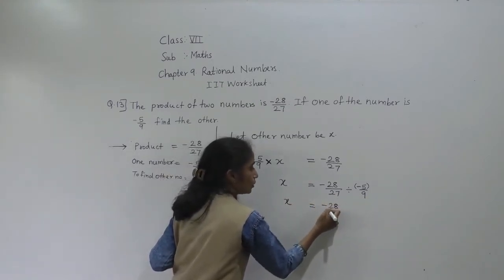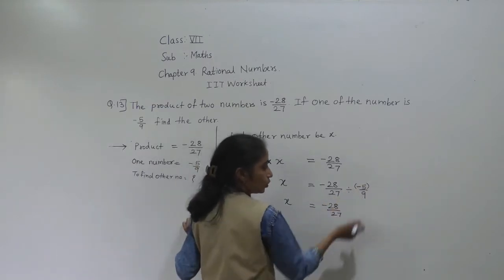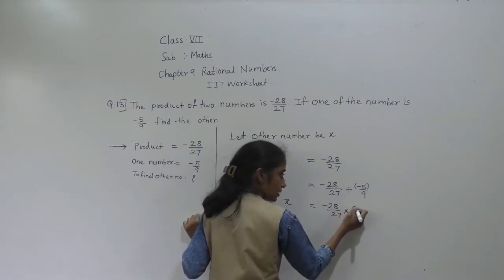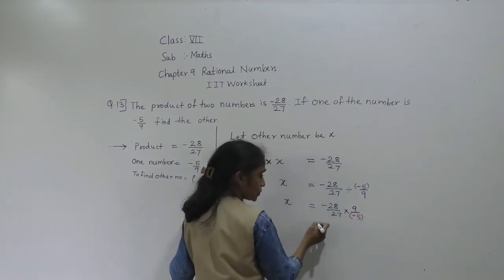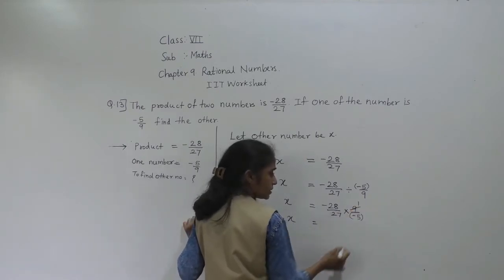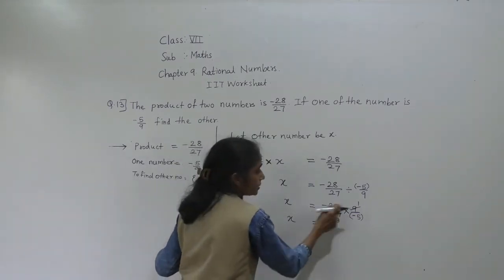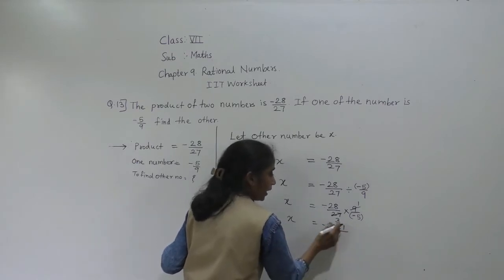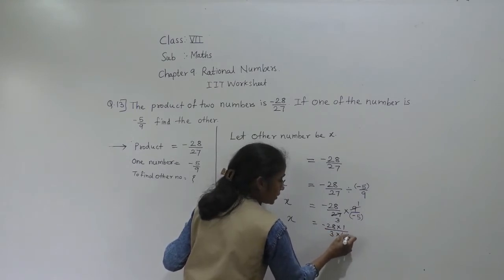So X is equal to minus 28 upon 27. Now since it is divided, we take the reciprocal of minus 5 upon 9. The reciprocal of minus 5 upon 9 is 9 upon minus 5. Now we can simplify: 9 threes are 27, so we get minus 28 into 1 in the numerator.